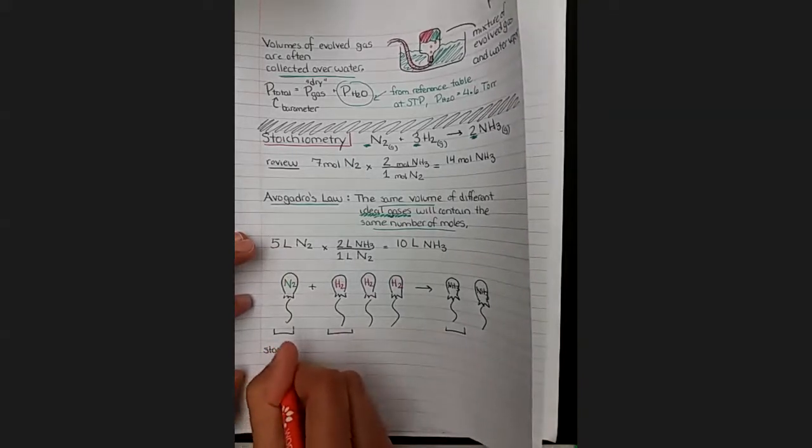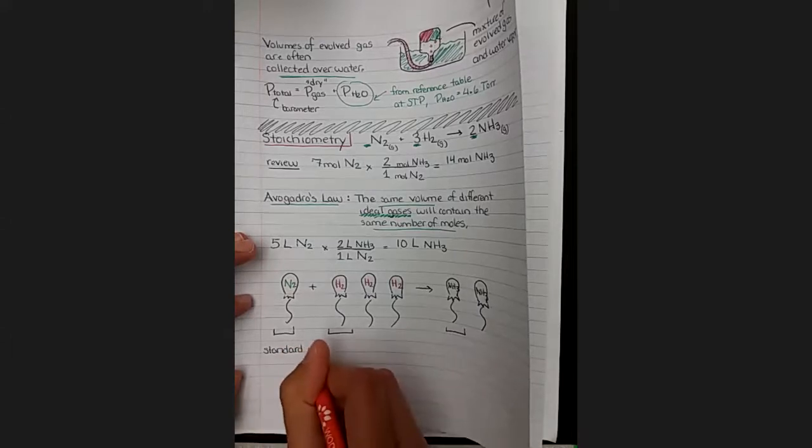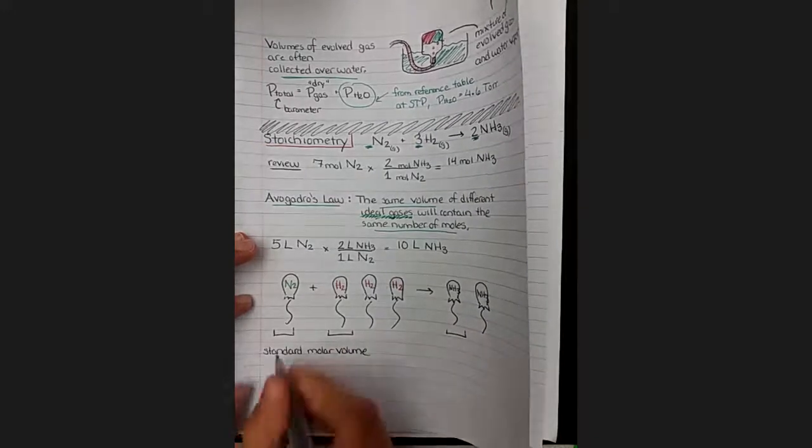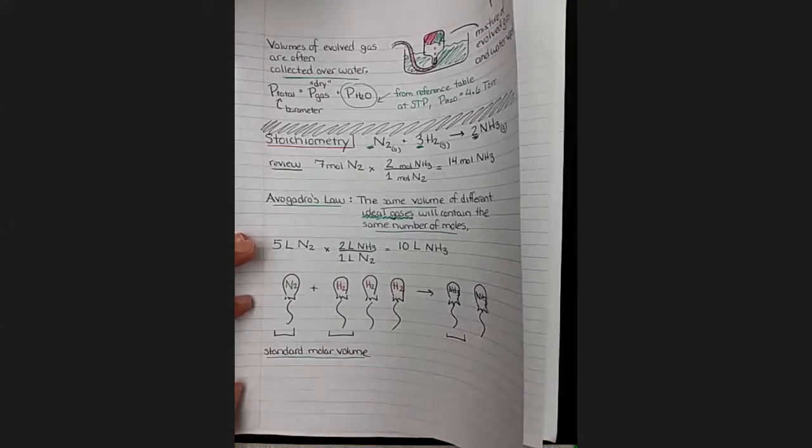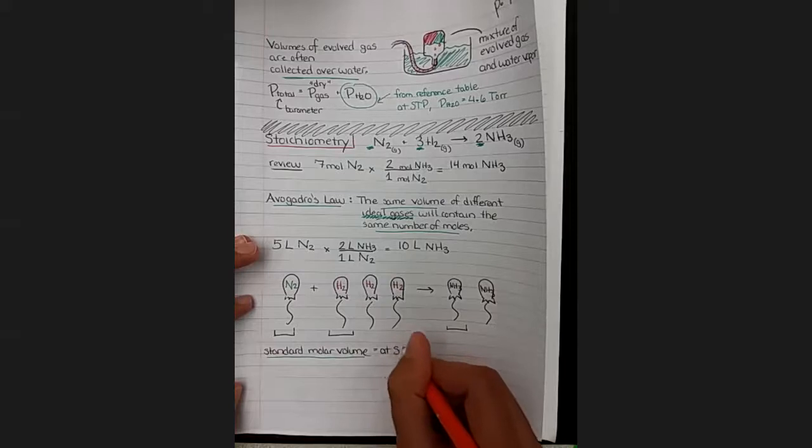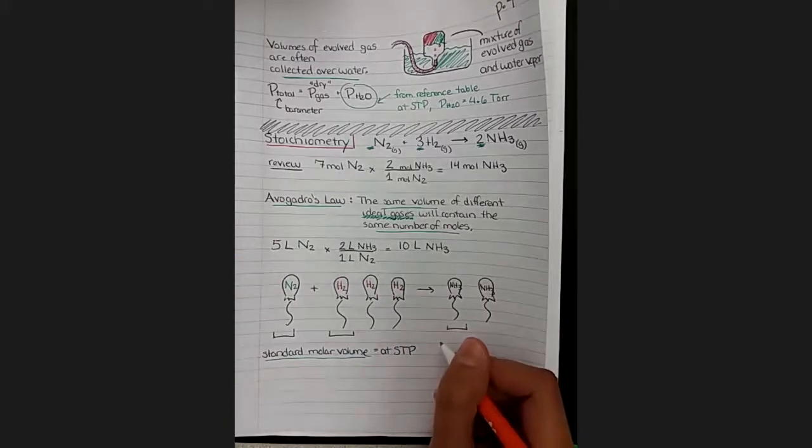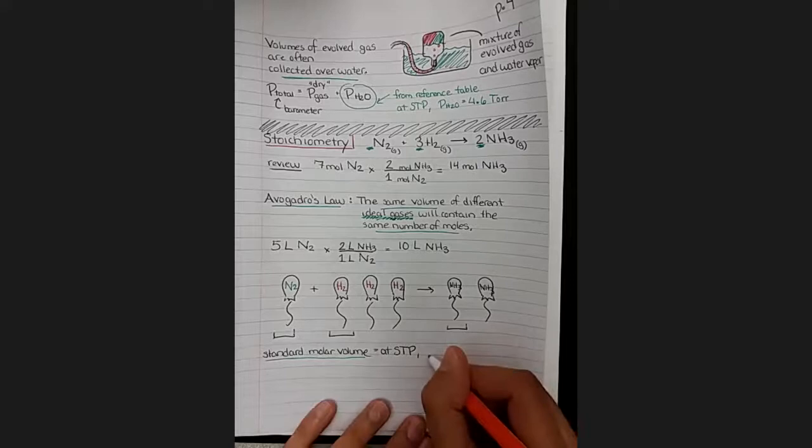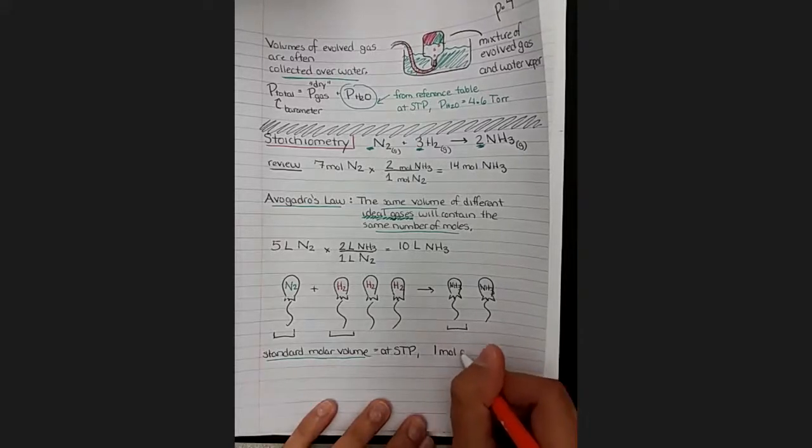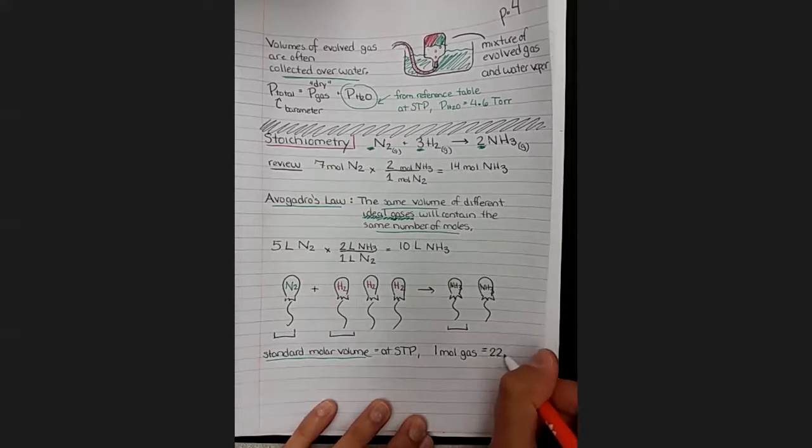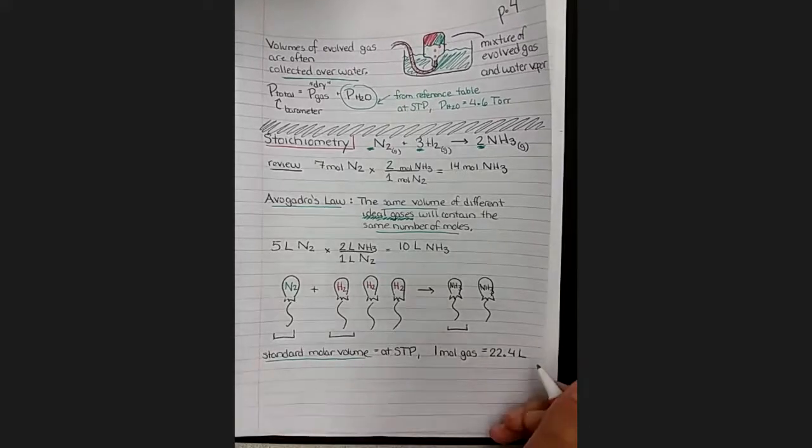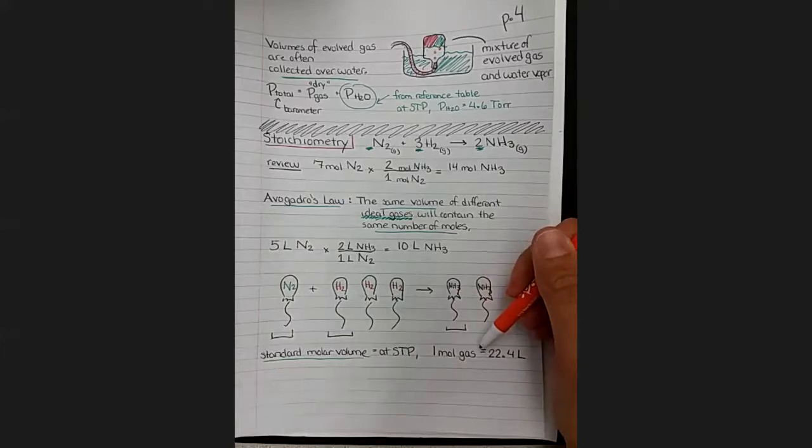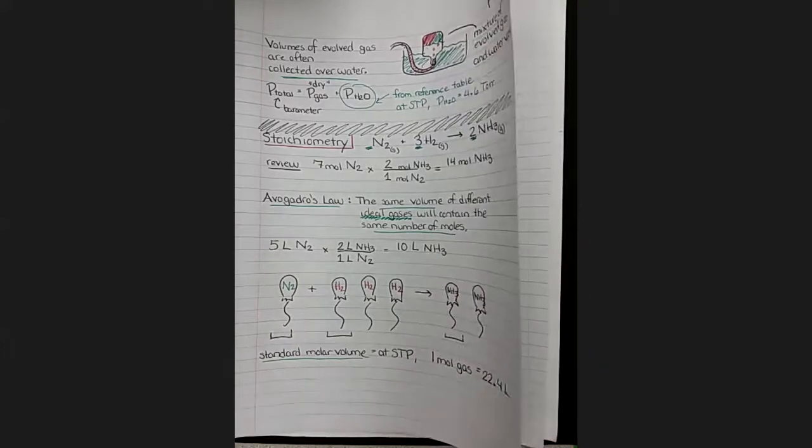With that in mind, I would like to introduce one final variable here, the standard molar volume. Standard, as you might have guessed, indicates it's at standard temperature and pressure. So we're at STP, zero degrees Celsius, and one atmosphere. At this set of conditions, we can define the exact volume of one mole of gas. At this set of conditions, one mole of any gas will equal 22.4 liters. If I had this amount, I could skip straight from the volume to the number of moles without doing the ideal gas law. Save myself a little bit of math.